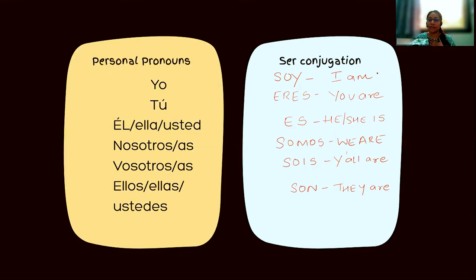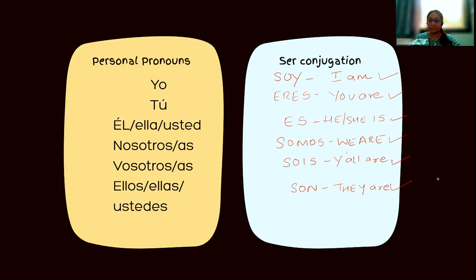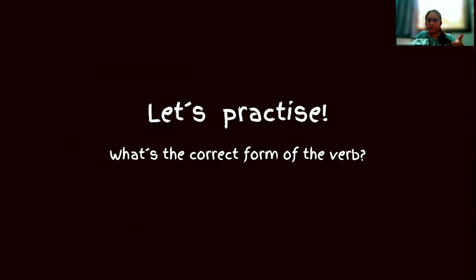Let's practice the pronunciation: yo soy — I am; tú eres — you are; él es, ella es, usted es — he is, she is, you are; nosotros somos — we are; vosotros sois, vosotras sois — you all are. Now let's practice these conjugations in sentences.